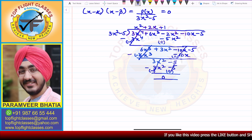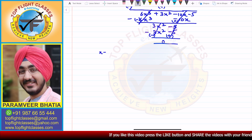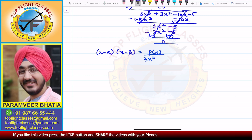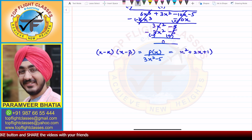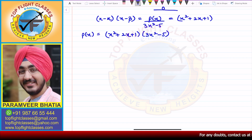So here, the quotient is x² + 2x + 1, which equals (x - α)(x - β), because it was p(x) divided by (3x² - 5), and the value of the quotient is x² + 2x + 1.